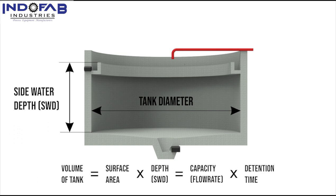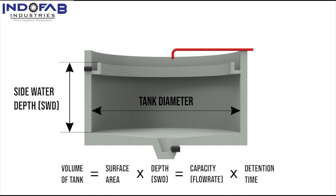The volume of the tank is given by surface area times depth, which equals tank capacity times detention time. Surface area is a function of the diameter, which is linked to the feed handling capacity of the unit. Detention time is directly linked to the depth of the tank and controls the quality of output from the overflow or underflow. Lower detention time gives more percentage solids in the overflow, while higher detention time adds to the depth and construction cost. There is a trade-off between these parameters, which is why we need to find the settling velocity that constrains everything.